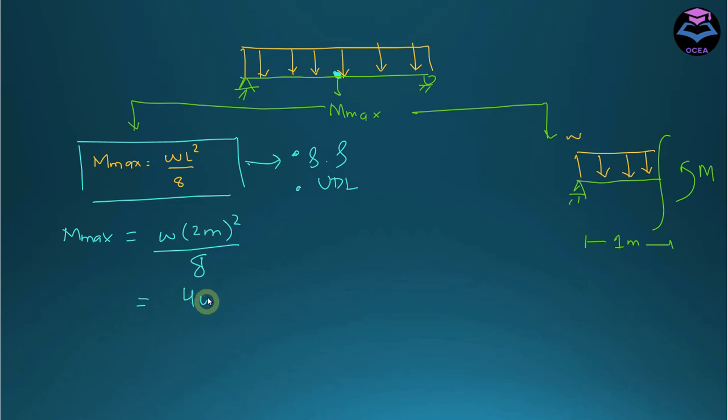Simplifying: 4w/8 = w/2 meter squared. This is the value of the maximum moment in terms of w.